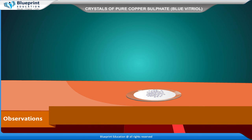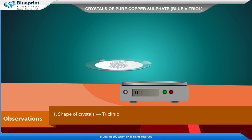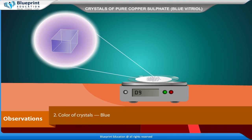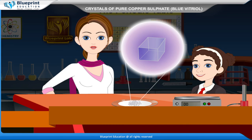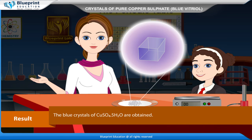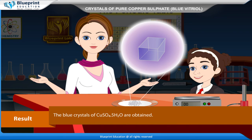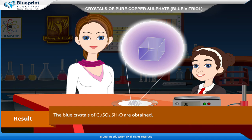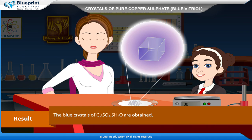Observations: Shape of crystals — triclinic. Color of crystals — blue. Weight of crystals obtained — X grams. Result: The blue crystals of copper sulfate, CuSO₄·5H₂O, are obtained.